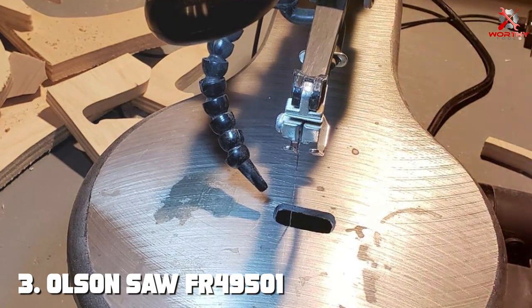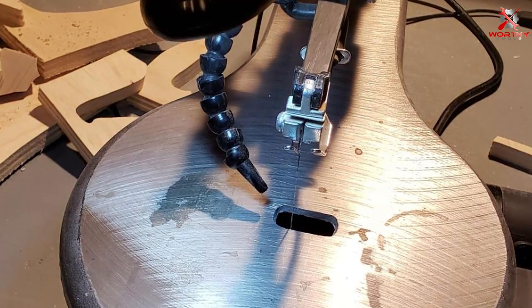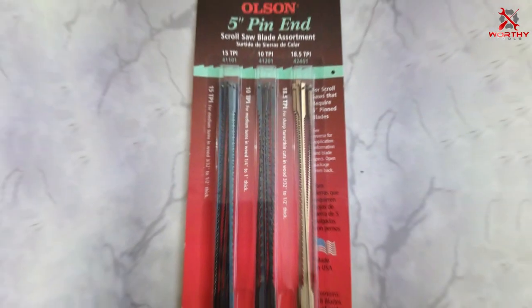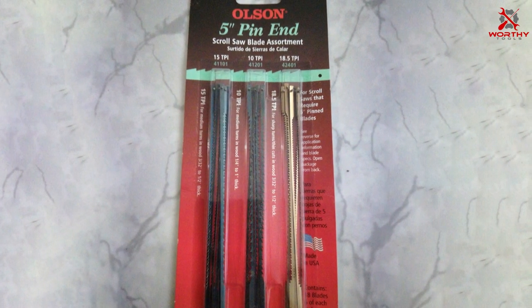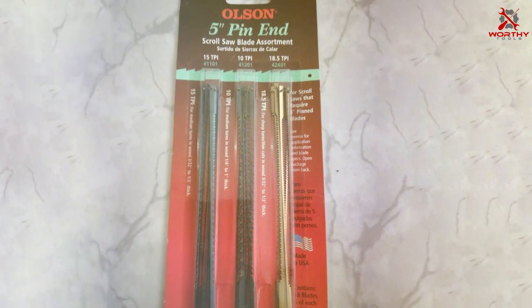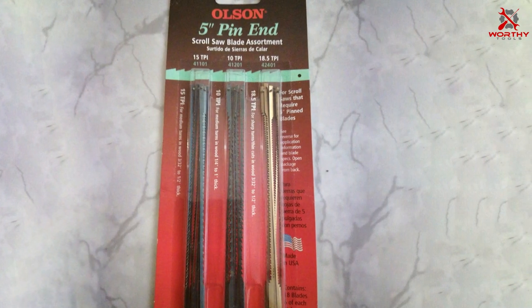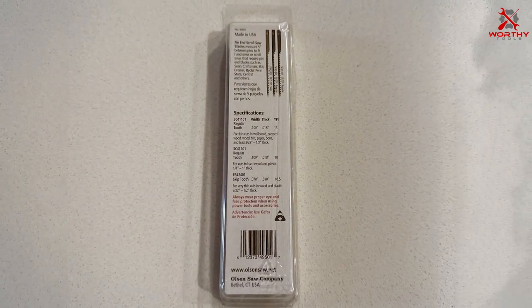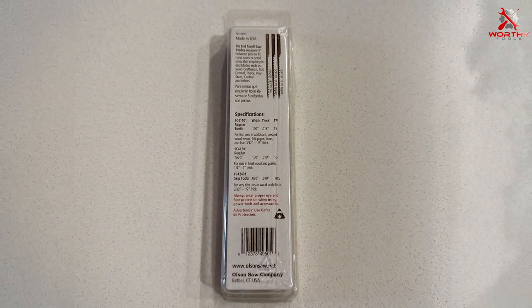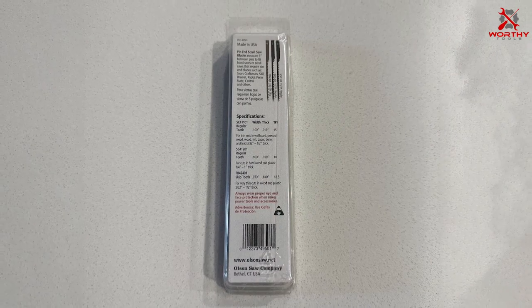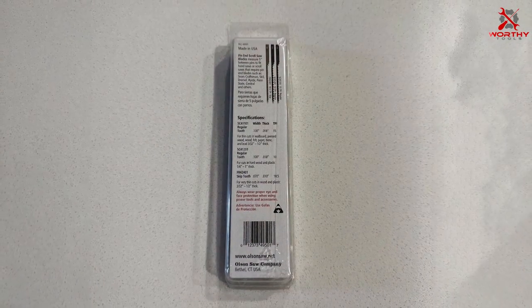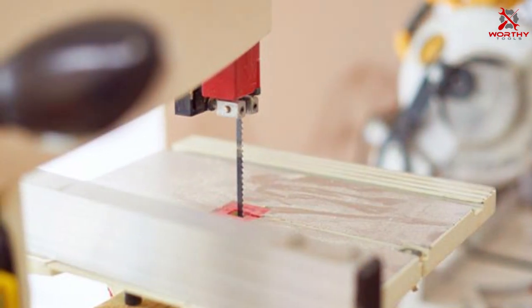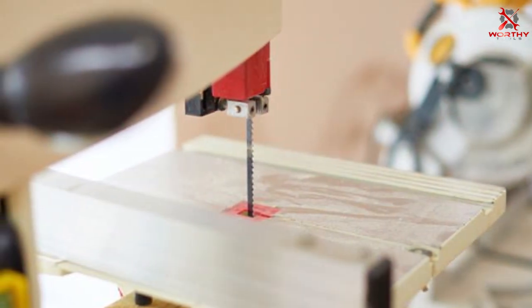Number three: Olsen Saw FR49000-501 Pin End Scroll Saw Blade 18-Pack. The Olsen Saw FR49000-501 pin end scroll saw blade set stands as a beacon of convenience and quality for enthusiasts and professional woodworkers alike. This 18-pack offers a selection of pin end blades renowned for their ease of installation and compatibility with a wide range of scroll saws. This universal appeal underscores the blade's versatility, making them a go-to solution for various woodworking projects.